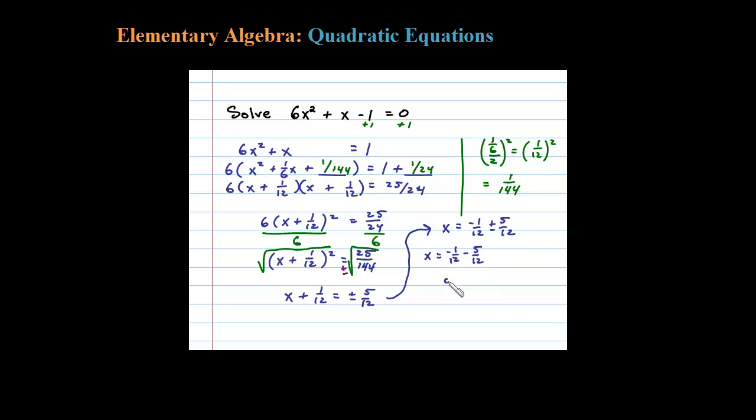or x equals negative 1/12 plus 5/12. In the original case we have negative 6/12 or negative 1/2. So there's one solution. Now the second one we have here, 4/12, which reduces to 1/3. So here's my two solutions.